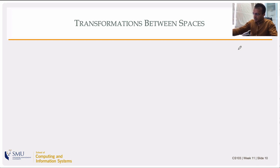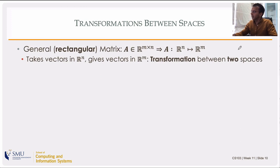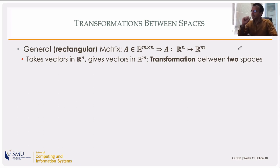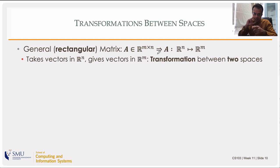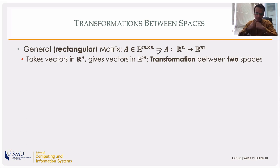Let's take a step back and look at a matrix as a transformation between spaces. If you take a matrix A and think of AX equal to B, X is the input and B is the output. X belongs to R^n if the matrix is an M-by-N matrix. So it's a mapping from R^n, taking vectors in R^n and giving vectors in R^m. For a non-square matrix, it's a transformation between two spaces.